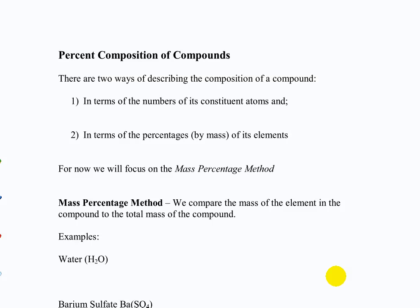Percent composition. There are two ways of talking about composition. The first one you're most used to is the numbers of its constituent atoms. We think about water as H2O, meaning that each molecule of water has two hydrogen atoms and one oxygen atom. But when you talk about an actual substance or how you would measure it, it doesn't really make sense to do it this way because you can't see the atoms.